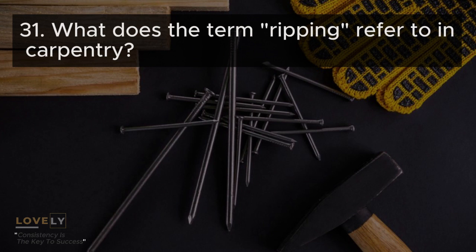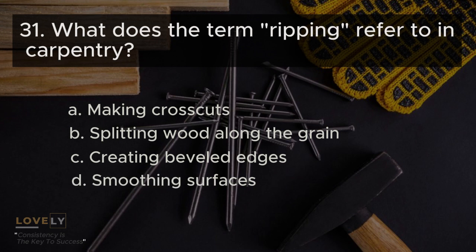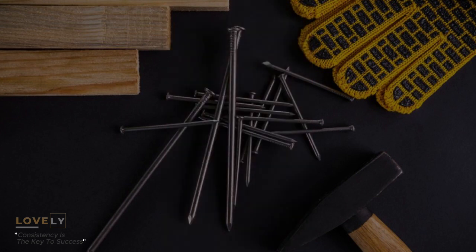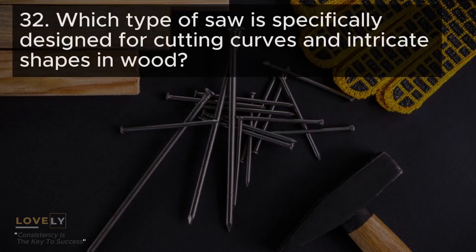Question 31: What does the term 'ripping' refer to in carpentry? A. Making crosscuts B. Splitting wood along the grain C. Creating beveled edges D. Smoothing surfaces. Answer B. Splitting wood along the grain.